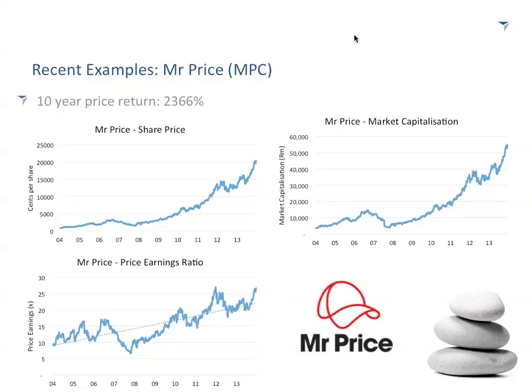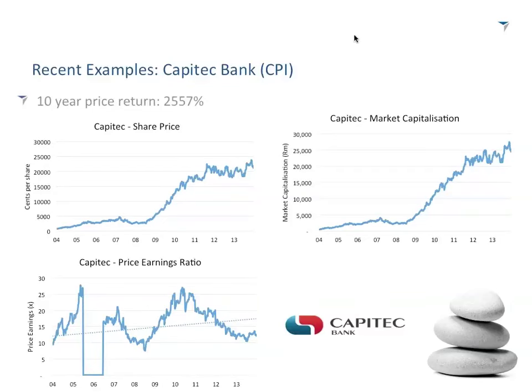The next case study is Capitec Bank. Its big competitor is no longer in shape or form — that would be African Bank. Capitec Bank started as an unsecured lender and it's moved into retail banking, which in the long run turned out a lot better than moving into furniture. Capitec over 10 years has produced a 25,000% return — that's a 26-bagger. These are huge numbers. If you put in one rand into Capitec, it would be worth 27 rand now.